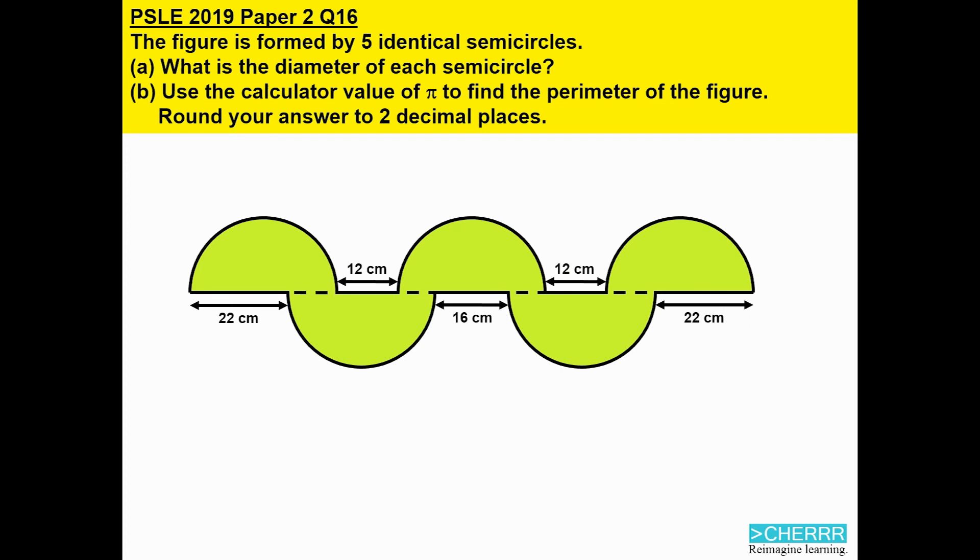In B, all we need to do to find the perimeter is to add the straight lines and to add the 5 semicircles. So let's start with the 5 straight lines. We have 22, 12, 16, 12 and 22. We need to add these 5 lines together to get us 84 cm.